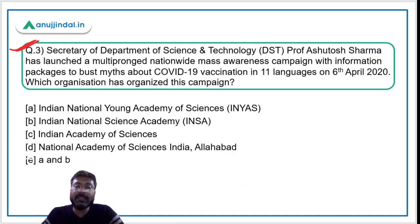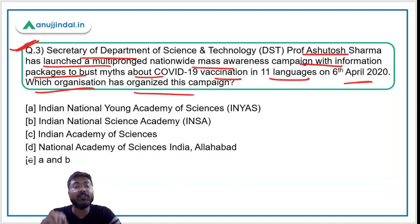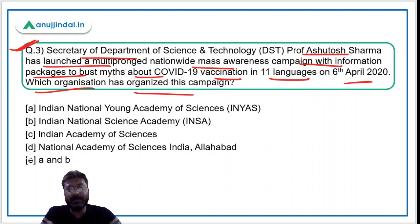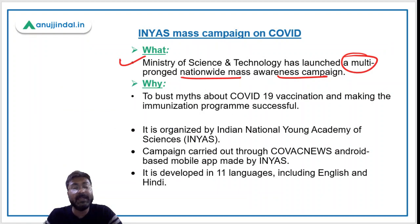Question 3: The Secretary of the Department of Science and Technology, Professor Ashutosh Sharma, launched a multi-pronged nationwide mass awareness campaign with information packages to bust myths about COVID-19 vaccination in 11 languages in April 2021. The question is: which organization organized this campaign? This campaign was launched by the Ministry of Science and Technology to remove myths circulating on social media about the COVID-19 vaccination.